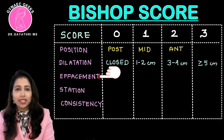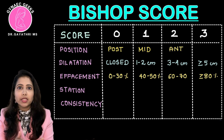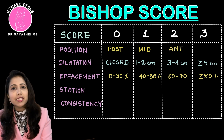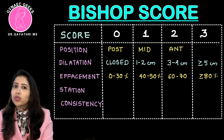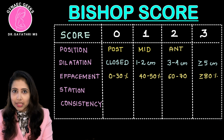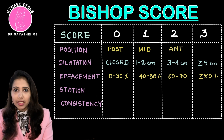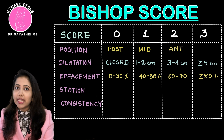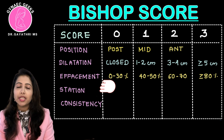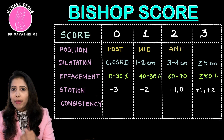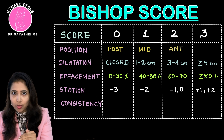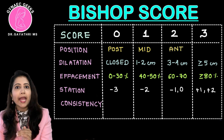Next is effacement. Score 0 is 0 to 30%, followed by 40 to 50% (score 1), 60 to 70% (score 2), and more than 80% (score 3) — so 10% increments of two after the initial range. Station can be minus 3 (score 0), minus 2 (score 1), minus 1 or 0 (score 2), and plus 1 or plus 2 (score 3).